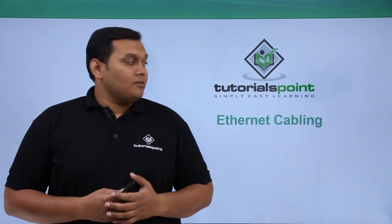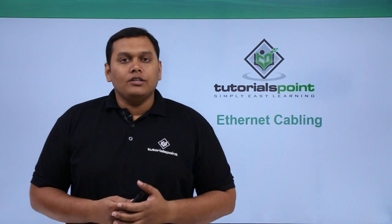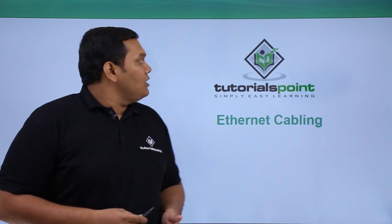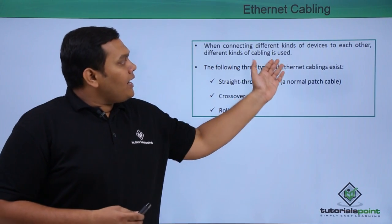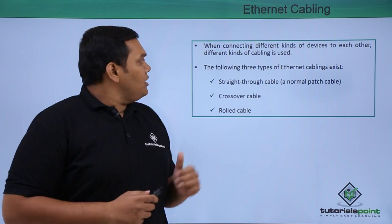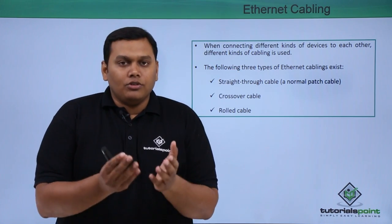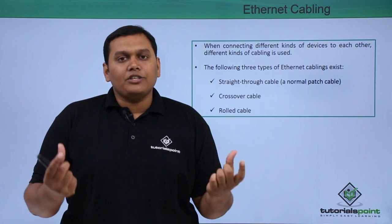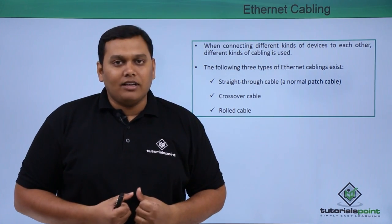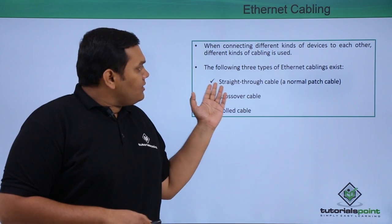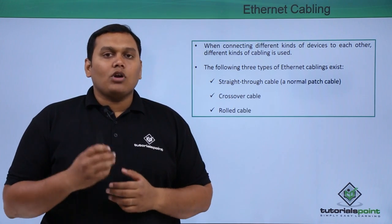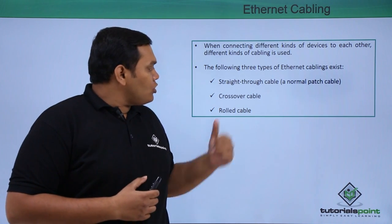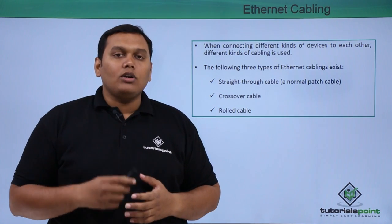In this video, we are going to discuss Ethernet cabling — what it is and what types of cables are available. When connecting different kinds of devices to each other, different kinds of cabling is used. There are three types of Ethernet cabling: straight-through cable (a normal patch cable), crossover cable, and rolled cable.